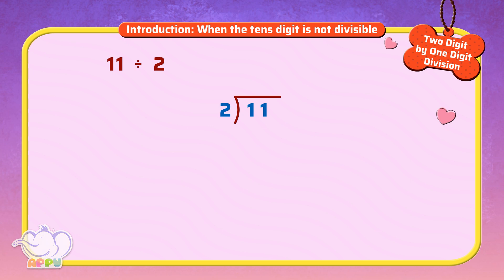We figure out how many twos does it take to make eleven or almost eleven, which is five.